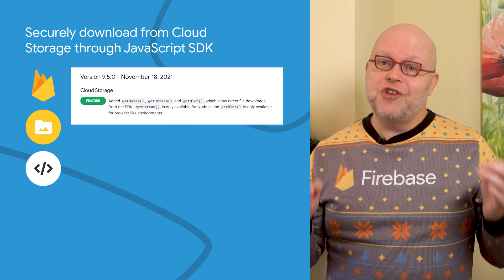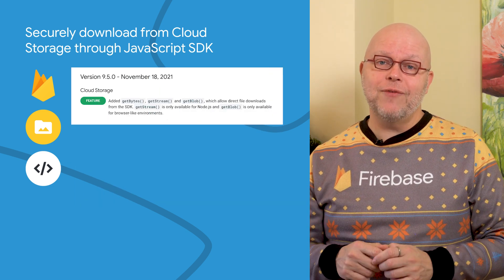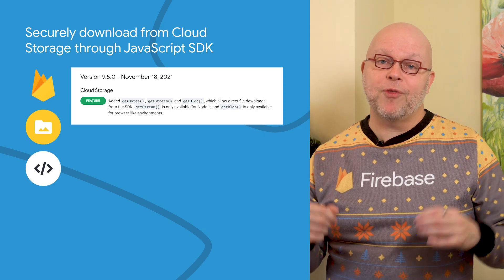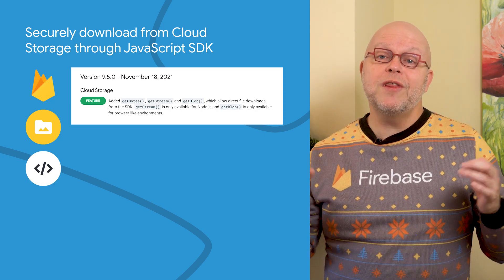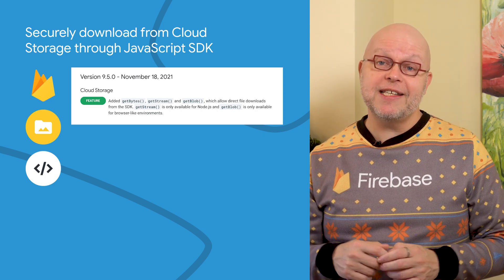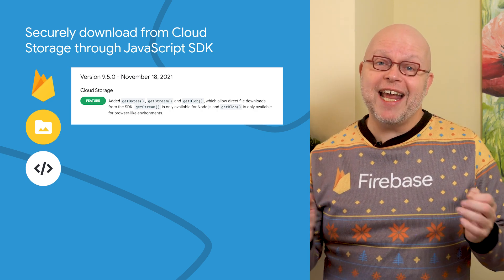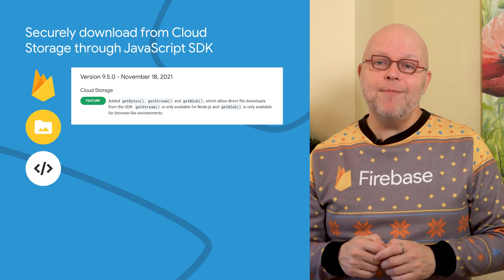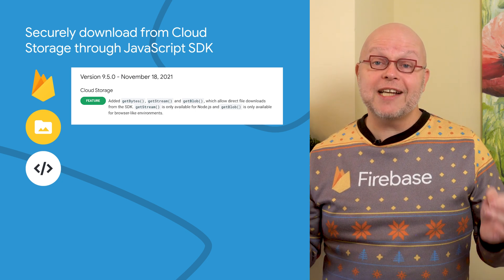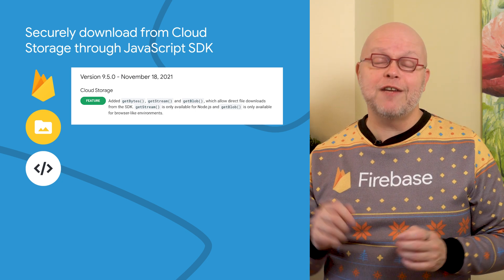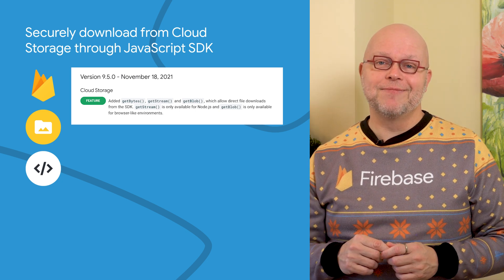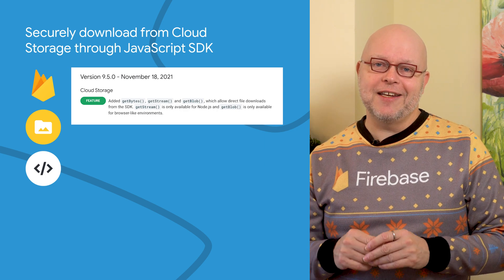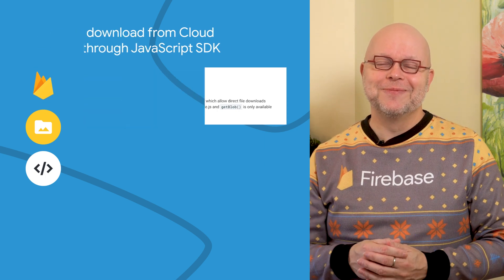Since JavaScript SDK version 9.5, you can also get the data into your web app through the SDK with the new getBytes, getStream, and getBlob methods. This brings them up to par with the access options for the native mobile SDKs. Check the link to the release in the description below.